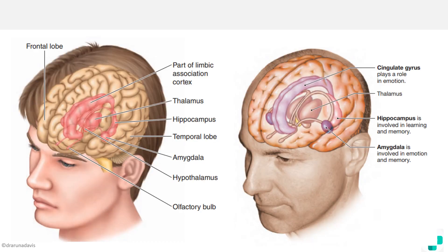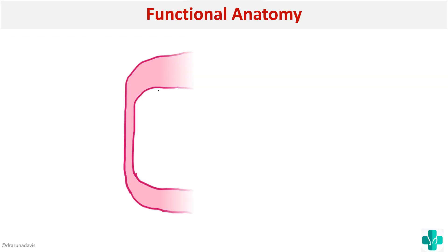Here you can see the different structures — it is ring-shaped and has cortical as well as subcortical structures. Now we need to know how to draw the diagram of the limbic system, so we move on to that. First we can draw the cortical structures and label them.